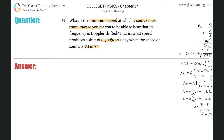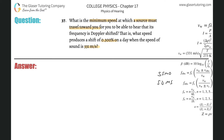First, we have our two Doppler formulas on the right-hand side — check out number 30 where I went through a detailed discussion. We have SMO (stationary source, moving observer) and SOMS (stationary observer, moving source). SOMS has the sign on the bottom, so I know which formula goes with which.